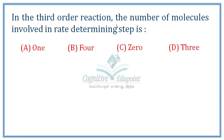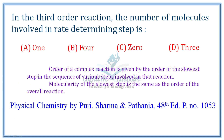Next question: in a third-order reaction, the number of molecules involved in the rate determining step is — the order of a complex reaction is given by the order of the slowest step in the sequence of steps. The slowest step is the rate determining step, and its molecularity equals the order of the overall reaction. So for a third-order reaction, the number of molecules involved in the rate determining step is 3. Correct answer D.